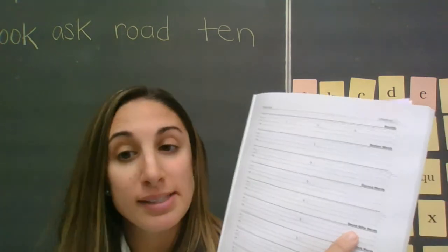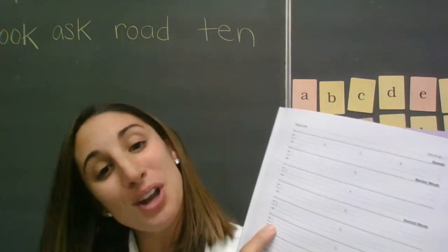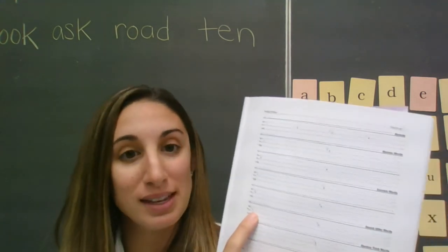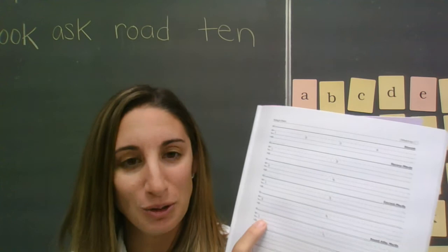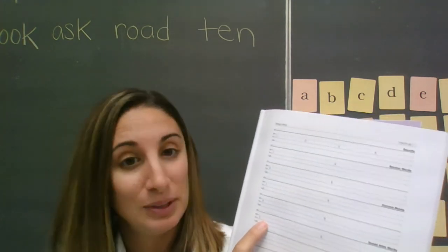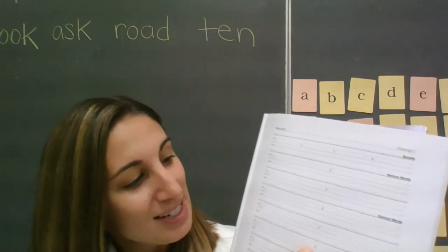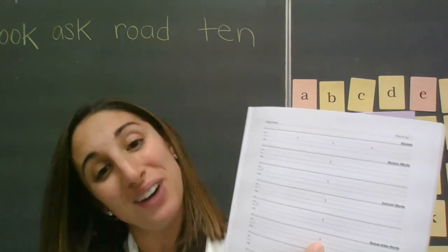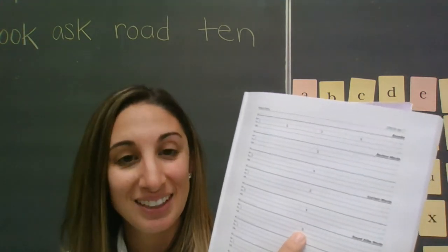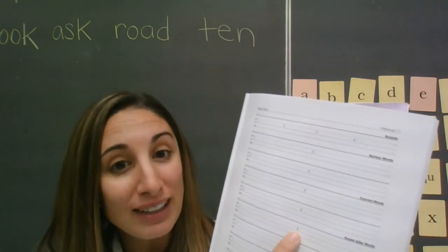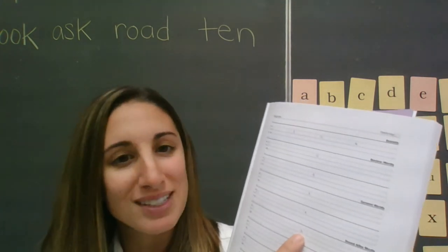Now we're going to go down to where it says sound-alike words. Next to number one, you're going to write no or know, depending on my sentence. Listen to my sentence: No, you cannot write sloppily on your paper. Which no did I use? Number two, you're going to write write or right. Listen to my sentence: You are absolutely right. Thank you for sharing that. Which write did you hear me use in that sentence?